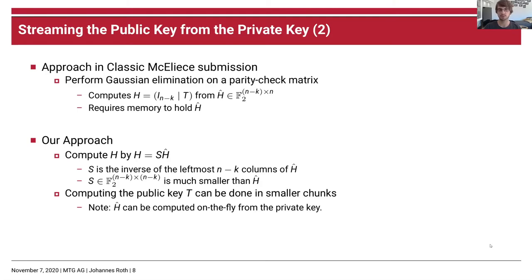S contains only the first n minus k columns. With this approach, we can compute the public key T in smaller chunks. Take S as given for now — we will explain how to compute S later. Note also that H-hat can be computed on the fly from the private key, so we can compute one column of H-hat without storing the complete matrix in memory.